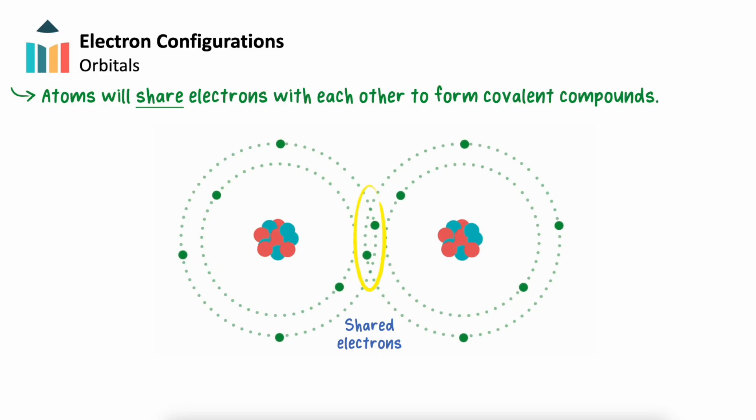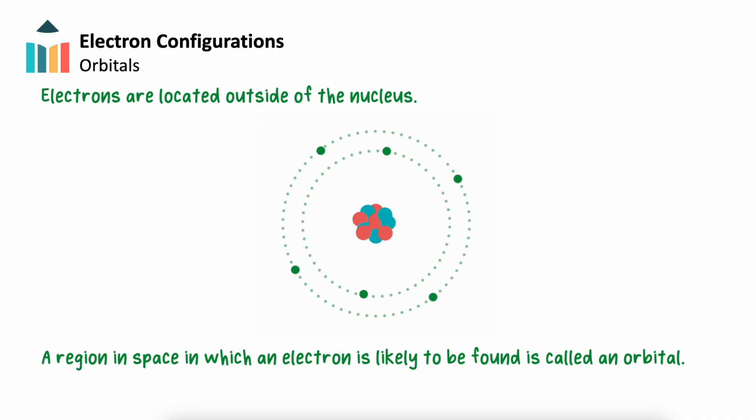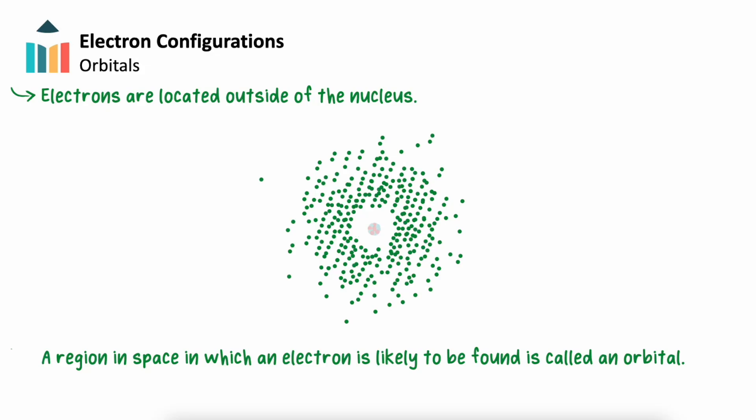To help us understand how and why these bonds form, we can look at how electrons behave and where they are located within the atom. Electrons can be found anywhere outside of an atom's nucleus, but as they pop in and out of existence, they are more likely to be found in some places over others. We can measure the areas that electrons have been around any given atom. This has created maps with defined shapes, which we call electron orbitals.